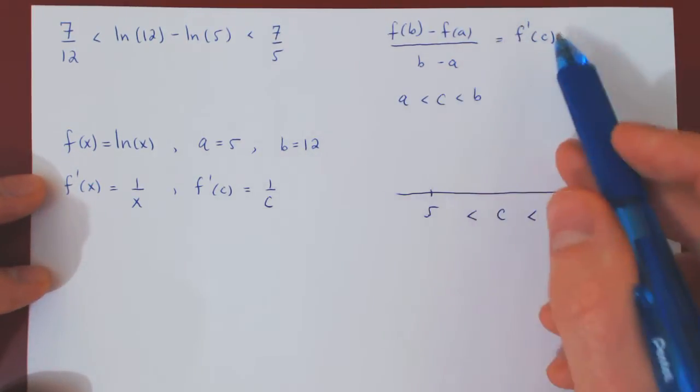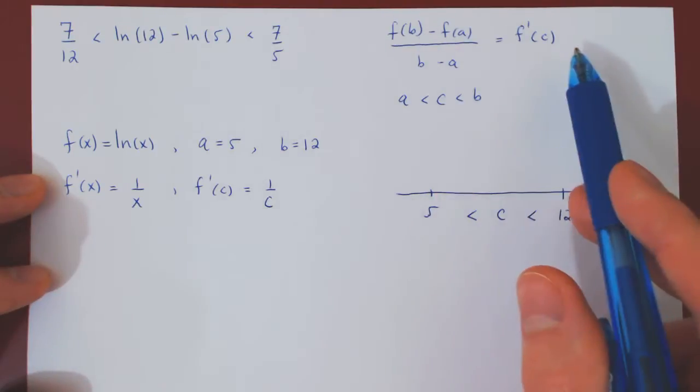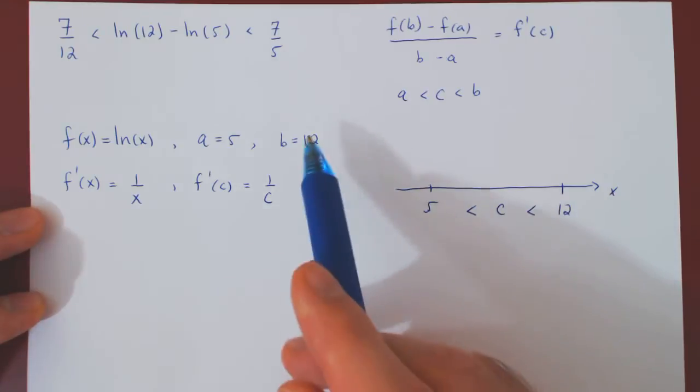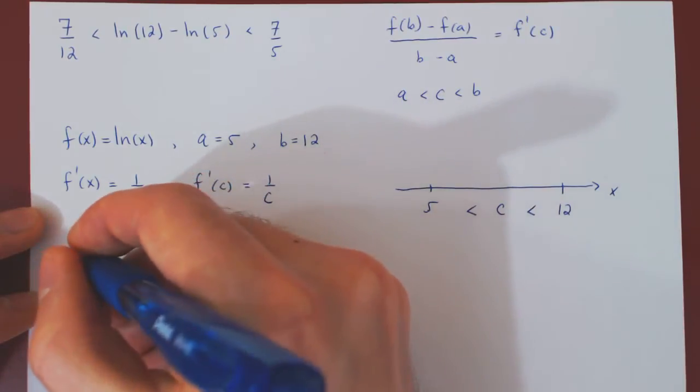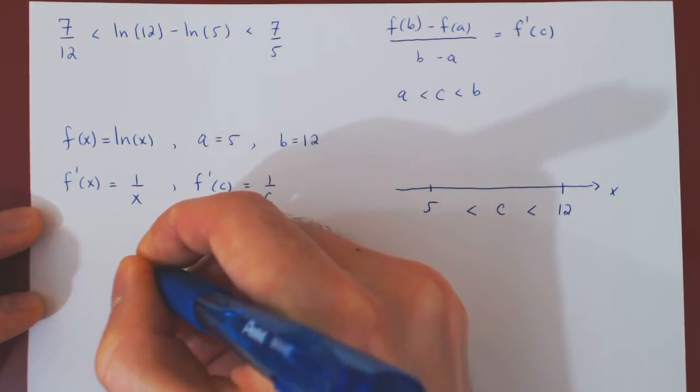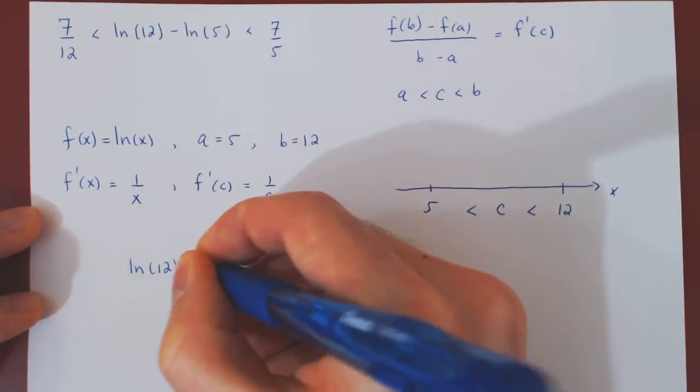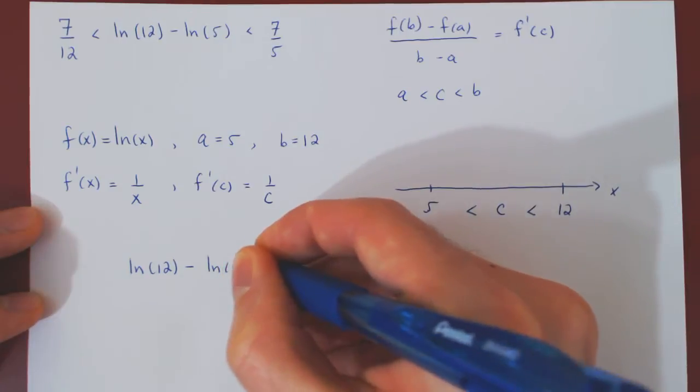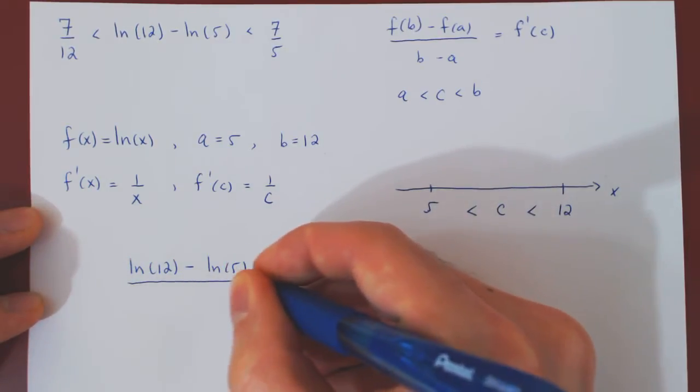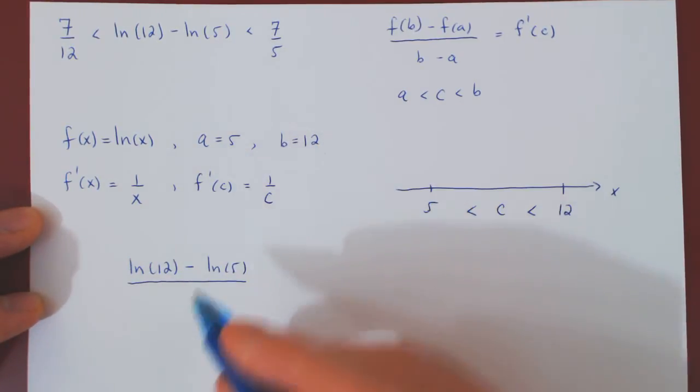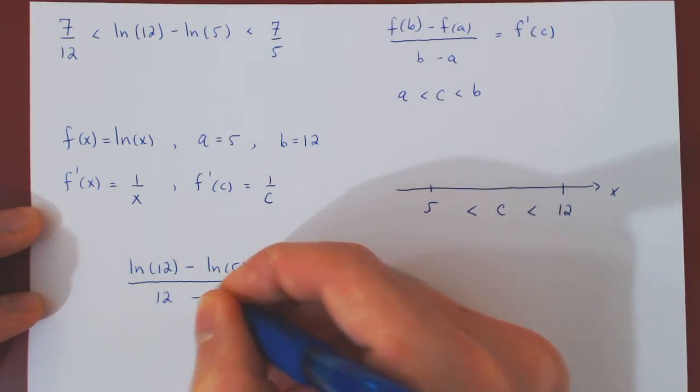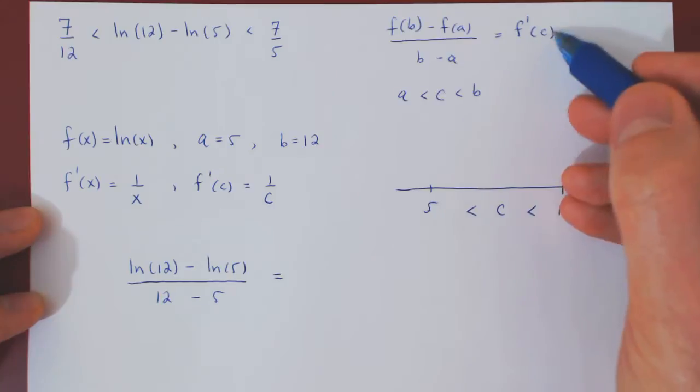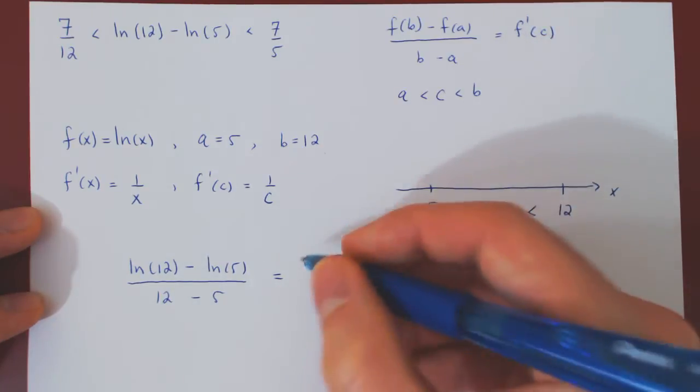Let's now plug in to this equality, this special case. So f of b, ln of 12, minus f of a, ln of 5, over b minus a, 12 minus 5. And this will equal the derivative of the function at c, which is simply 1 over c.